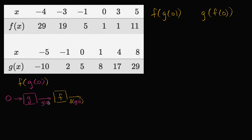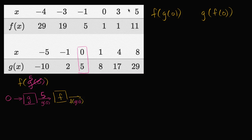I wrote these small here so we have space for the actual values. What's g of zero? When we input x equals zero, we get g of zero is equal to five. So we're now going to input five into our function f — we're essentially evaluating f of five. When you input x equals five into f, you get f of five is equal to eleven. So f of g of zero is equal to eleven.